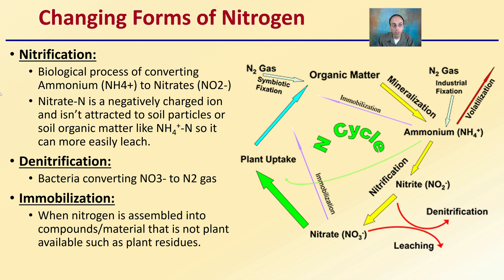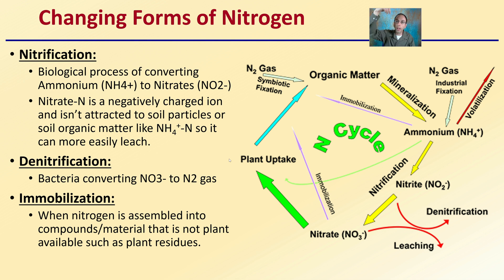Regarding changing forms of nitrogen: nitrification is the biological process of converting ammonia (NH4+) to nitrates. The nitrate ion (NO3-) is negatively charged and is not attracted to soil particles or soil organic matter like ammonium is, so it's more easily leached — two negative charges repel one another. Denitrification is bacteria converting NO3 to NO2 gas, which is then lost to the atmosphere through volatilization. Immobilization is when nitrogen is assembled into compounds not available to plants, such as plant residues — another way nitrogen cannot benefit the crop being grown.